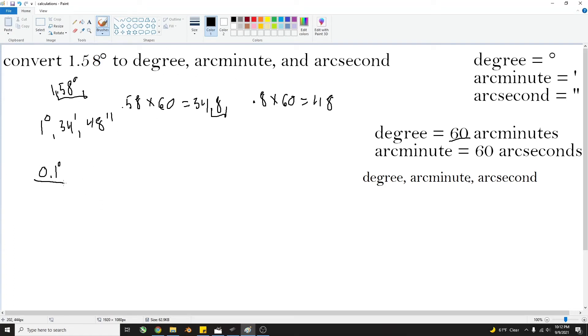Now we're doing this one. So we'll do the same thing. You separate this. 0 degrees. And you take the 0.1, and you multiply that by 60.